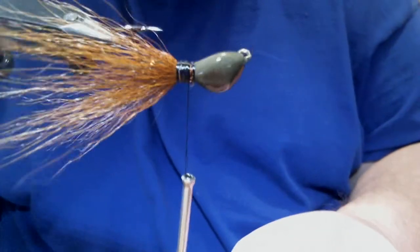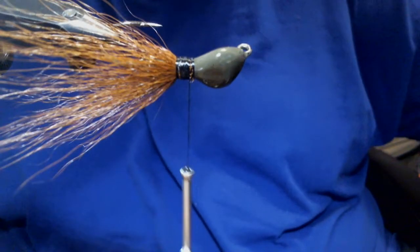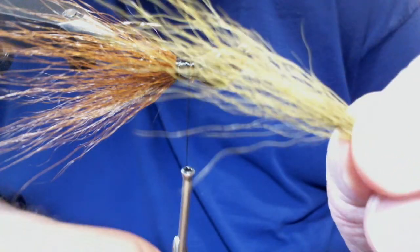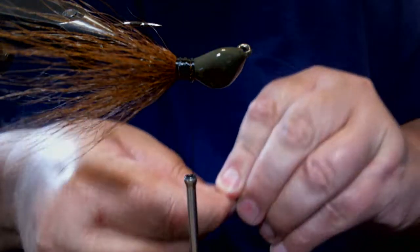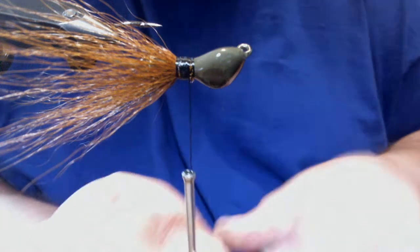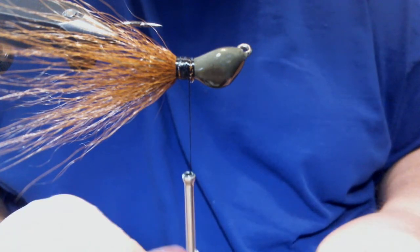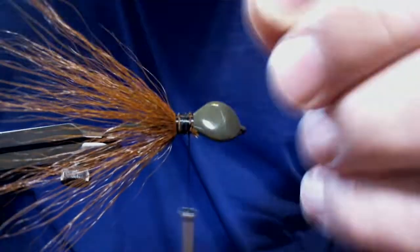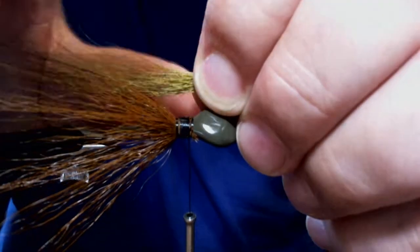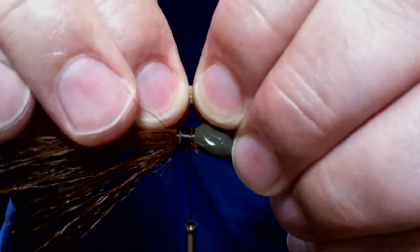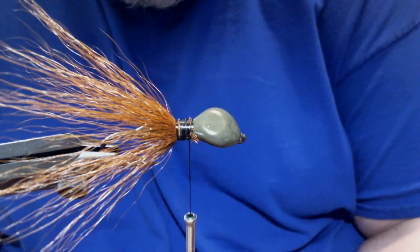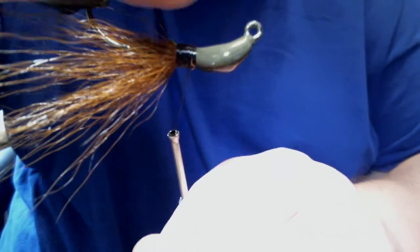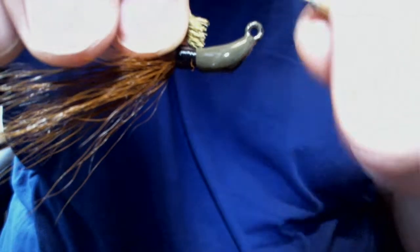Now we're going to do the upper end of it and we're going to take some olive bucktail. I know it's hard to see. I should have wore a different color shirt. The blue doesn't work well with the green pumpkin. But I apologize for that. So we're going to take our olive and we're going to do the same thing. I'm just going to lay it out here against what I already have tied in.